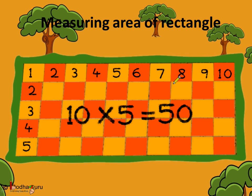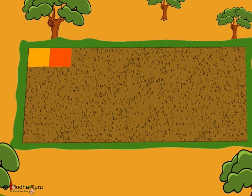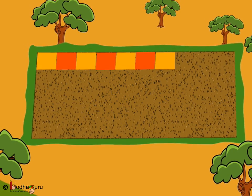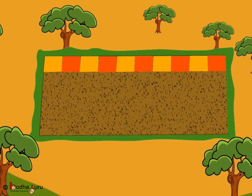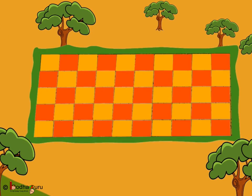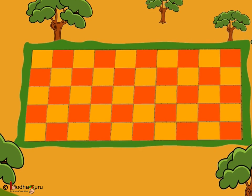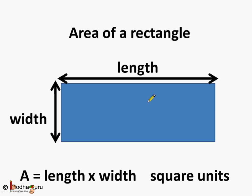So, now you know how to calculate the area of a rectangle, and you can do it in two ways. Firstly, by finding out how many square tiles are used to fill up the area — like here, 10 multiplied by 5 is 50 tiles used to fill up the rectangular area. The next way is, if you know the length and the width, you can find out the area by multiplying length into width. The area is always expressed in square units.